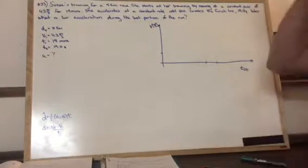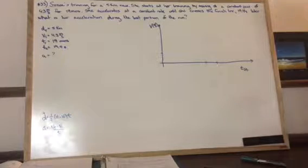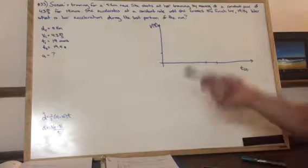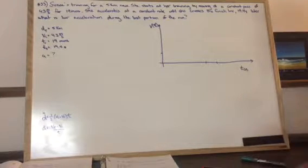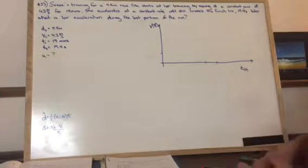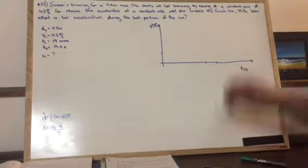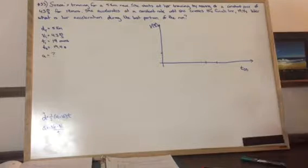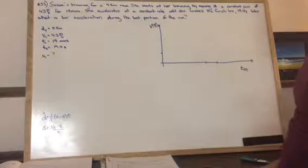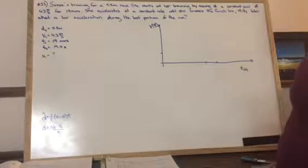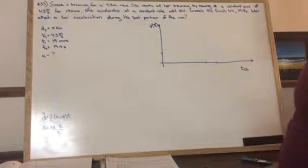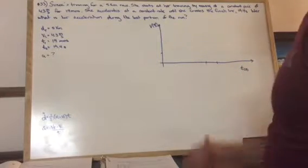Okay, I just did this for some people who might be having difficulties on the last physics homework question. So the question is, Sunny's training for a five kilometer run. She starts training by moving at a constant pace of 4.3 meters per second for 19 minutes. She accelerates at a constant rate until she crosses the finish line 19.4 seconds later, what is her acceleration during the last portion of the run?